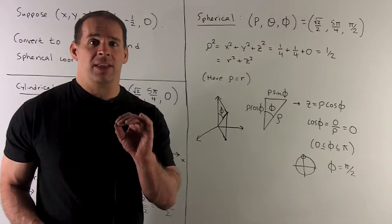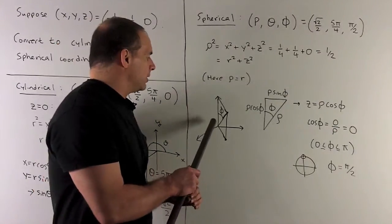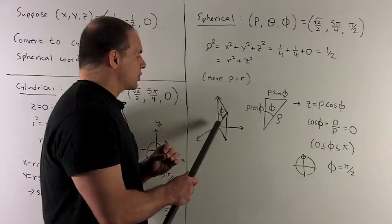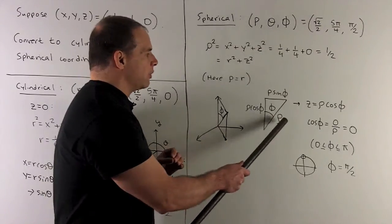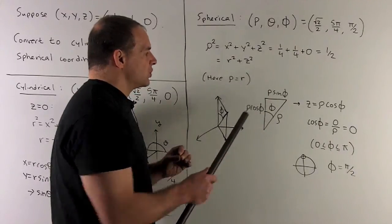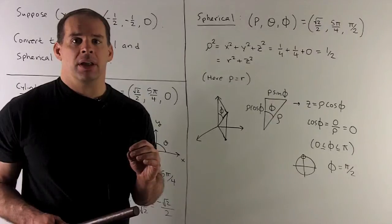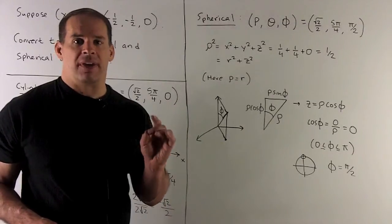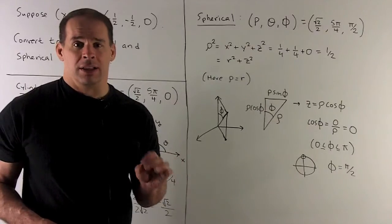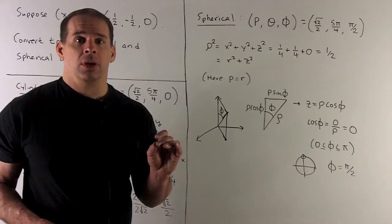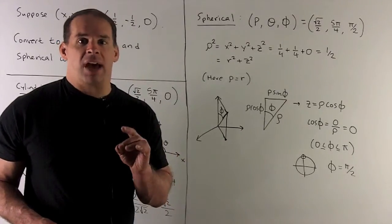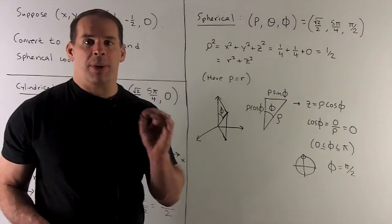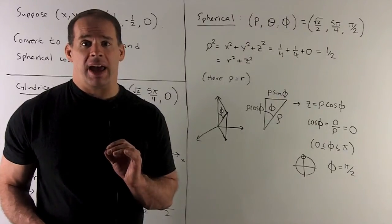Let's check the equations. Taking the right triangle with the hypotenuse as the distance from the origin to our point — that's rho. The angle phi gives the adjacent side as rho cosine phi, which is also the height of our point, so that's z. We know z equals zero, so rho cosine phi equals zero. Since rho is non-zero, dividing through gives cosine phi equals zero. Cosine is zero at pi halves or three pi halves, but since phi is between zero and pi, our phi must be pi halves. That checks our work.